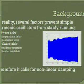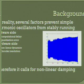In reality, several factors prevent simple harmonic oscillators from stably running, as we can see from this graph. The problems are many. On the software side, there are computational delays and quantization errors that make the calculation of the oscillation not as accurate as expected.